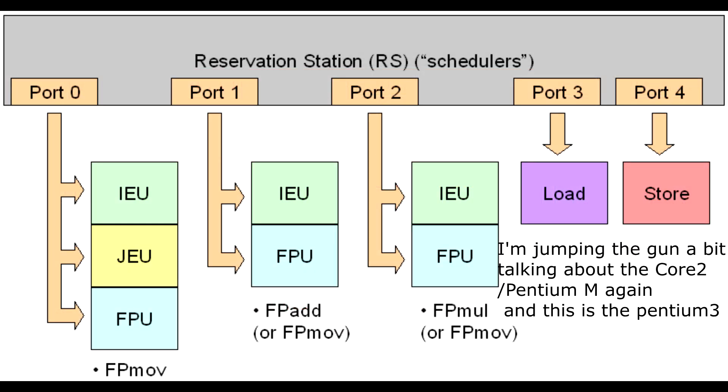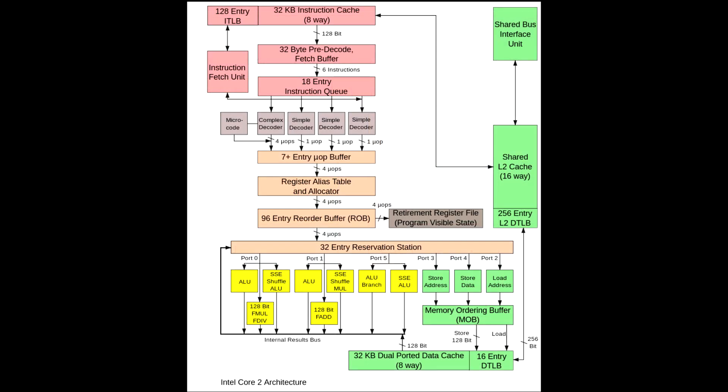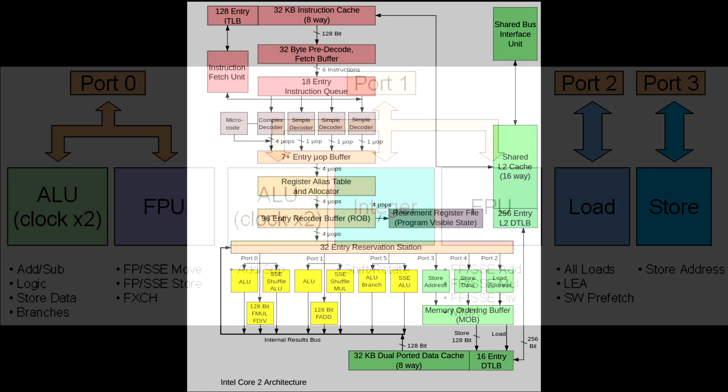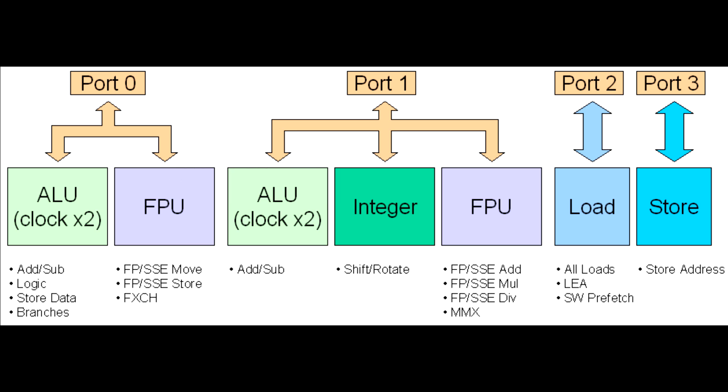Intel thought, again, that they could get around this by pulling a sneaky trick and double pumping the ALUs. That is, make them run at 2 times the CPU frequency. Now, this doesn't really work, especially on ALUs that are as simple as the ones in this architecture.